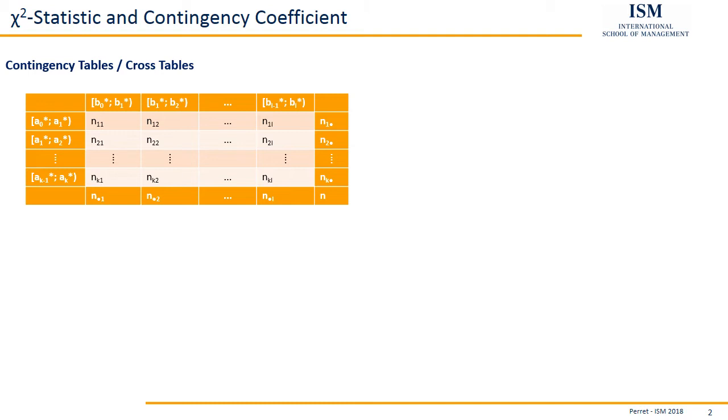And then, on the borders, we see the n1 dot or the n.1, n.2, that's the so-called marginal frequencies. That's basically the absolute values for each of the two variables seen separately. Or in other words, that's the sum of the corresponding row or the sum of the corresponding column.